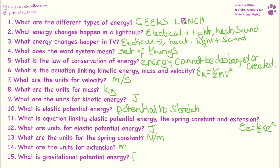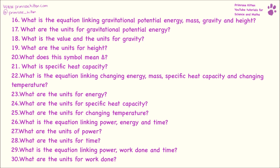What is gravitational potential energy? That is falling energy, or the energy that something which is about to fall has. What is the equation linking gravitational potential energy, mass, gravity and height? Gravitational potential energy equals mass times gravity times height. What are the units for gravitational potential energy? Like all energy, that is measured in joules. The units and value for gravity is 9.8 newtons per kilogram. What are the units for height? Height is measured in metres.